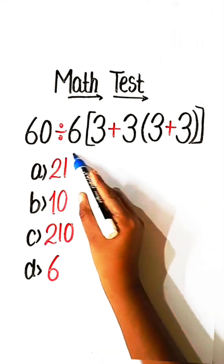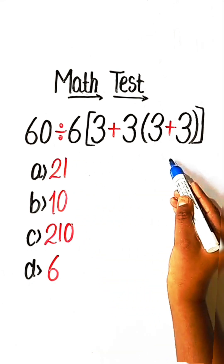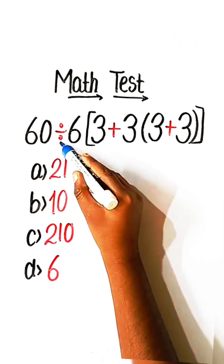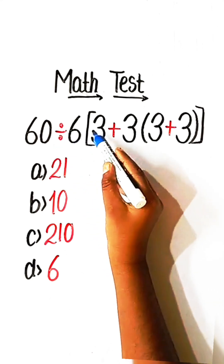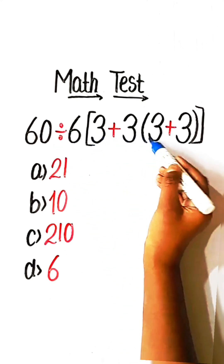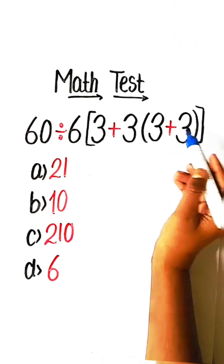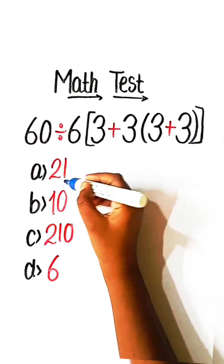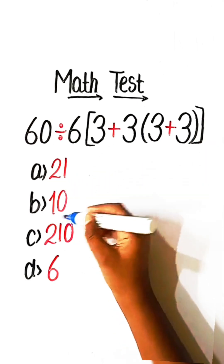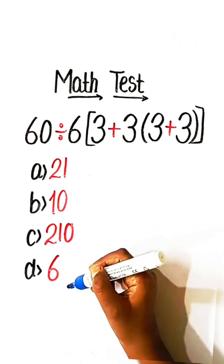Hello everyone, in this video we will solve this math expression: 60 divided by 6, under bracket 3 plus 3, under bracket 3 plus 3, equals to what? Options: 21, 10, 210, and 6.